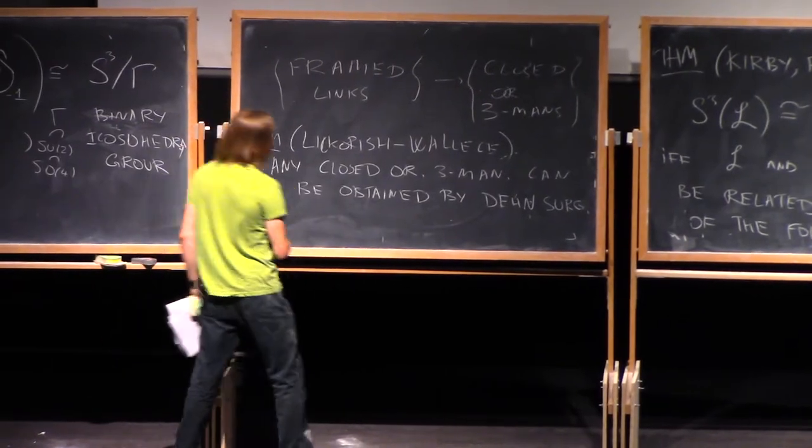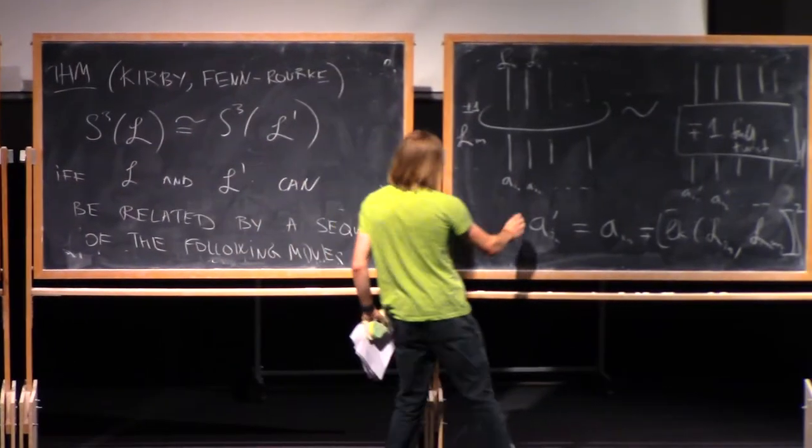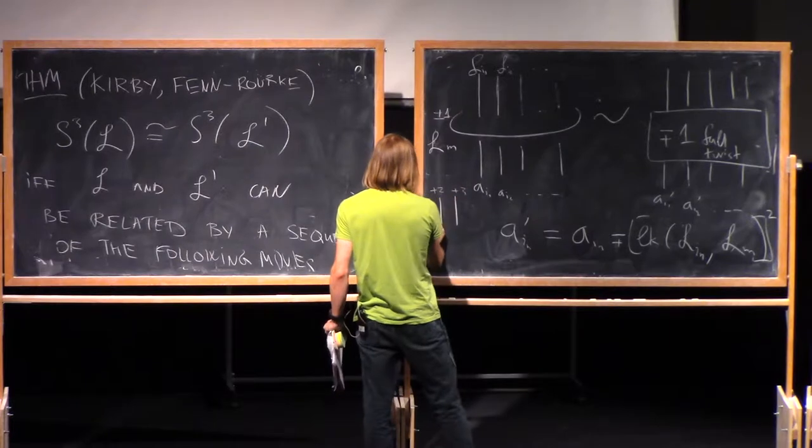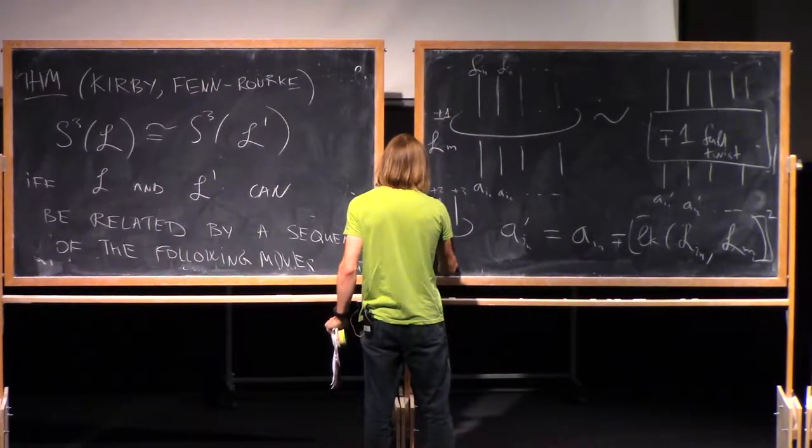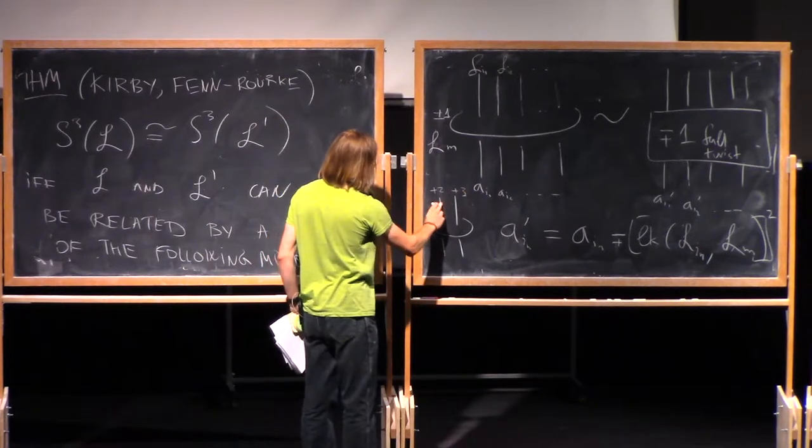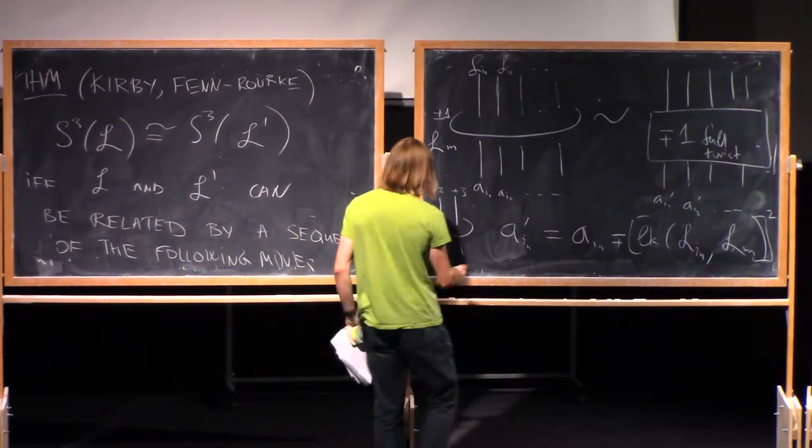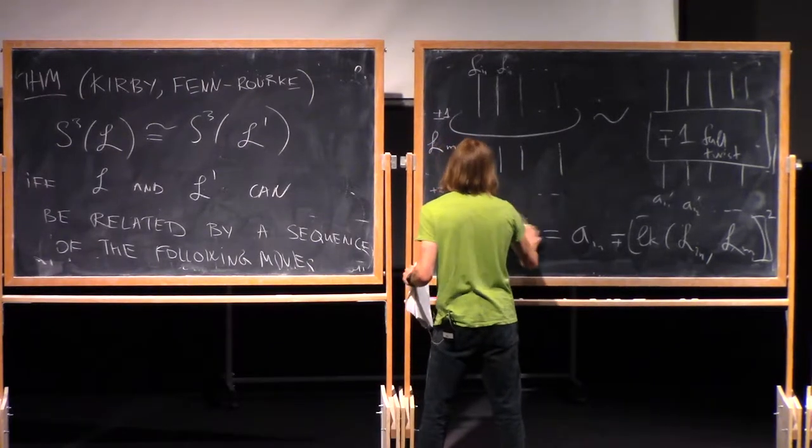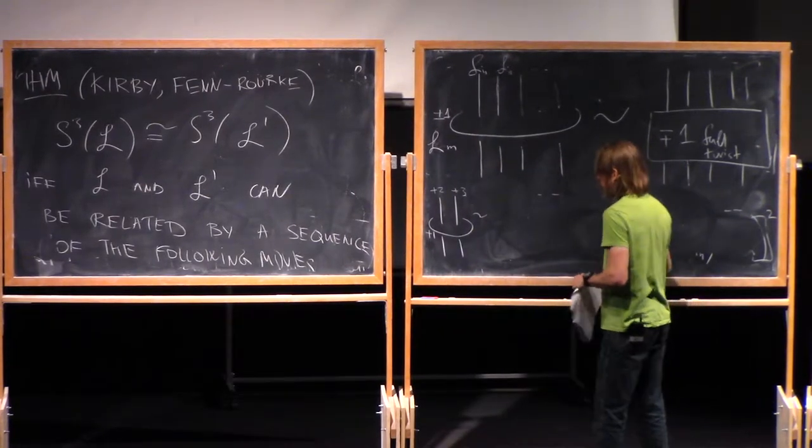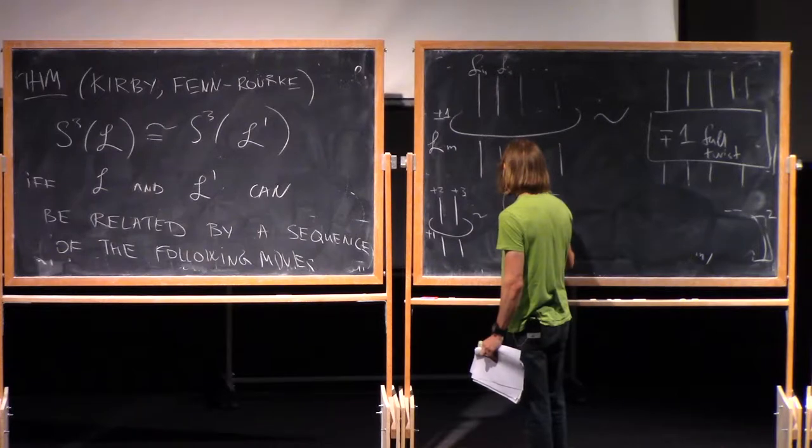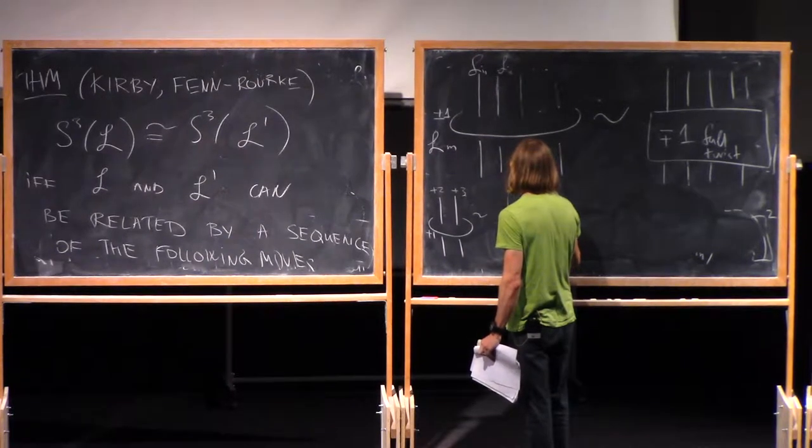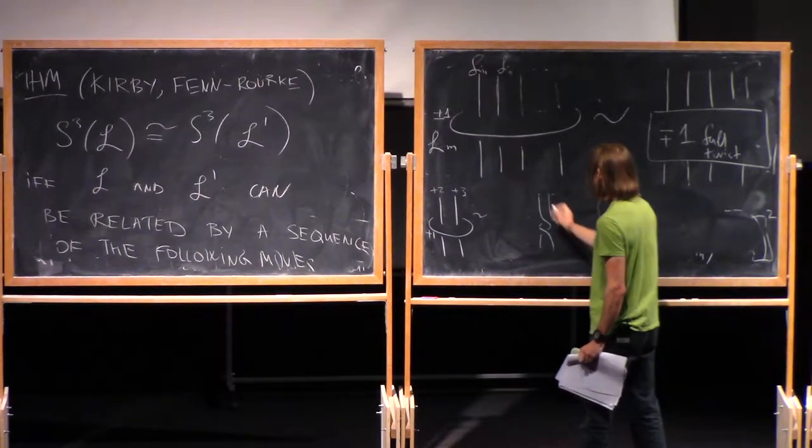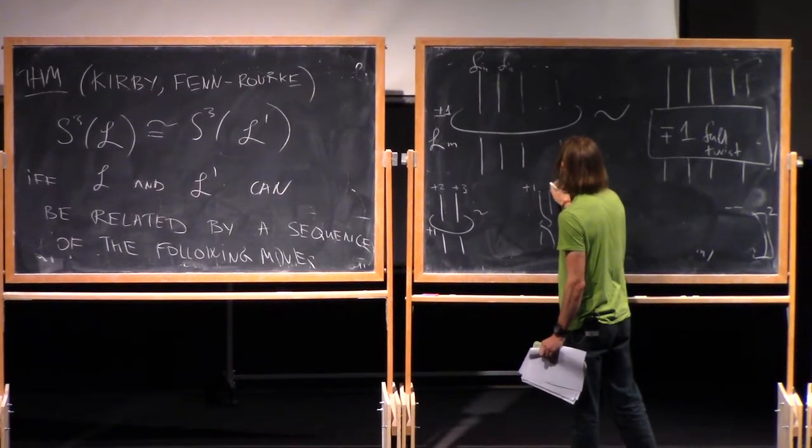So let me give you some example. If I have something like plus 2, plus 3, and I have here plus 1. Suppose these are different components. So when I do this move, I replace it by this thing with framings plus 1, plus 2.